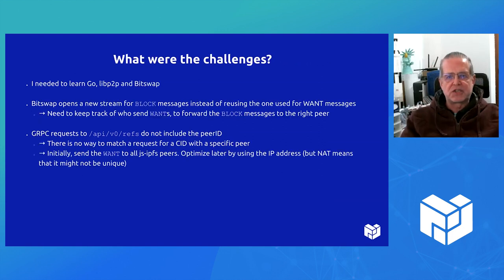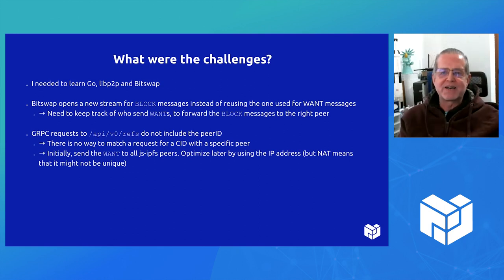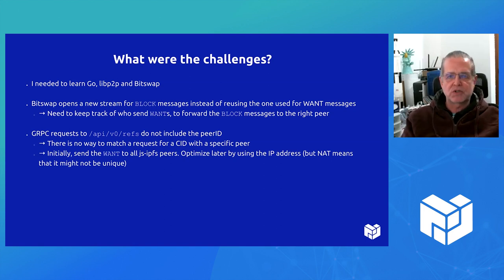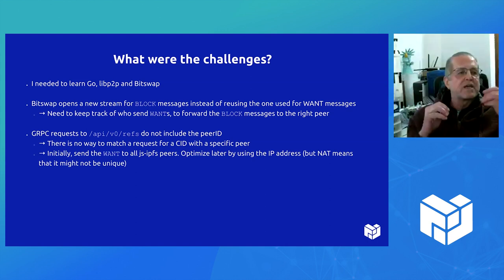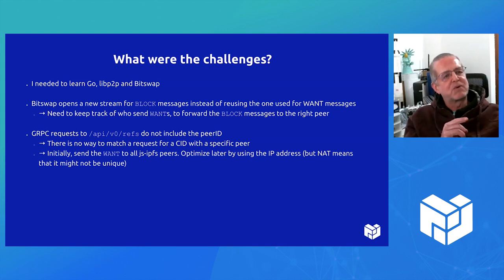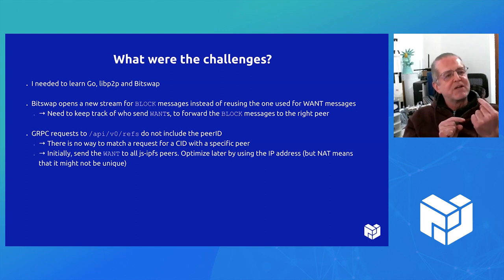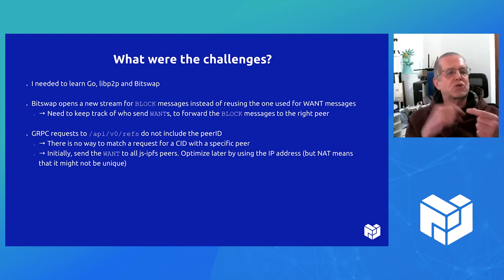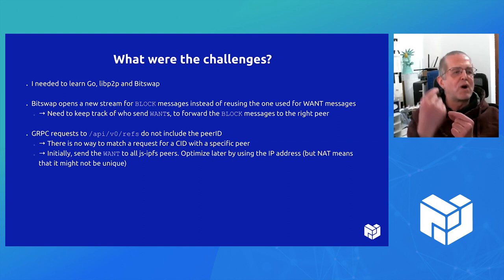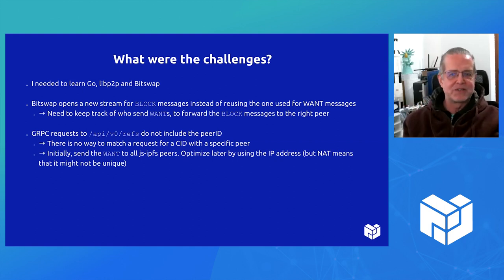We have a couple of challenges. First of all, I did not know Go, so I took this as a chance to learn Go, and of course diving into how to use the P2P stack and how BitSwap works. One problem is that BitSwap, when you send a want, will not send the blocks over the same stream that it got the want on — it will open a new stream. So I get this stream from the upstream node, but I don't have the association for who requested it. I had to make it keep track of who wanted what, so I could send them what they wanted.